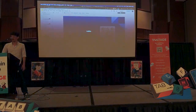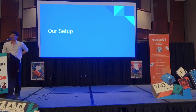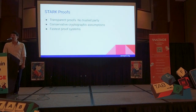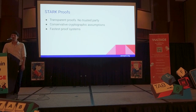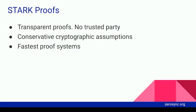We are using STARKs. STARKs are nice — they are transparent. You may have heard of SNARKs, and those SNARKs are a bit troublesome because they require a trusted setup, and then everybody who's using it relies on the people who made that trusted setup actually deleting the toxic waste. If they didn't delete the toxic waste, then the proof is basically worthless. STARKs don't require any trusted setup, so they're completely transparent, and there is no way to forge them.